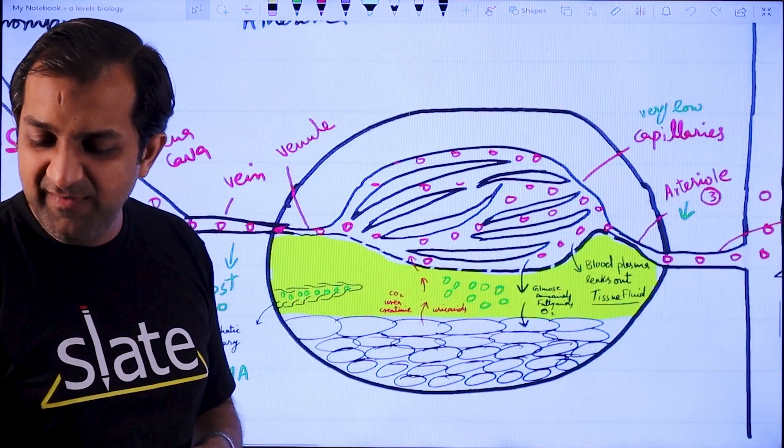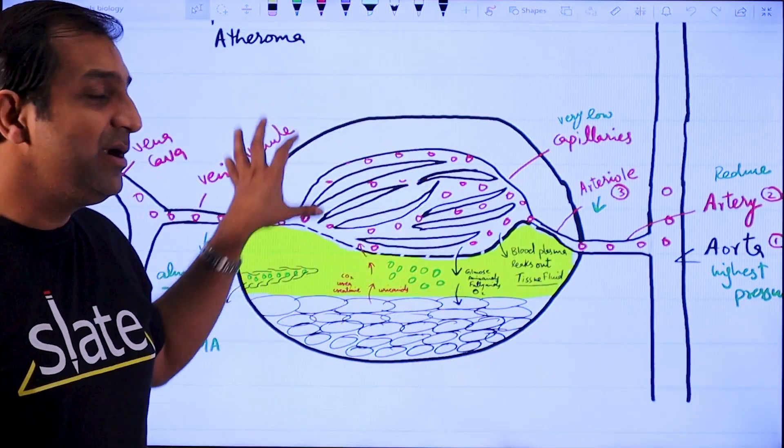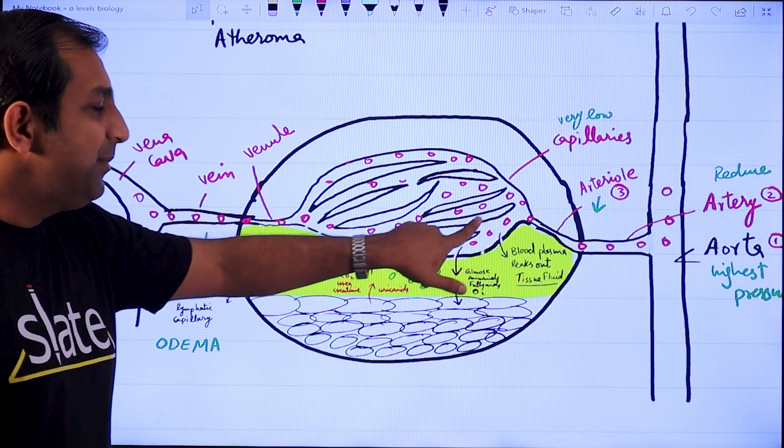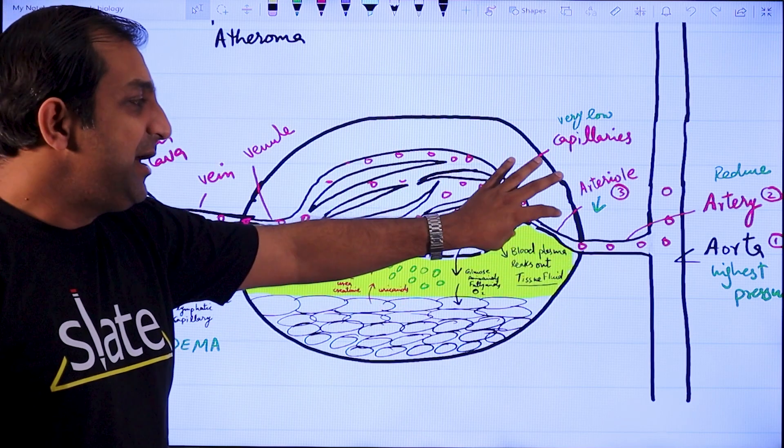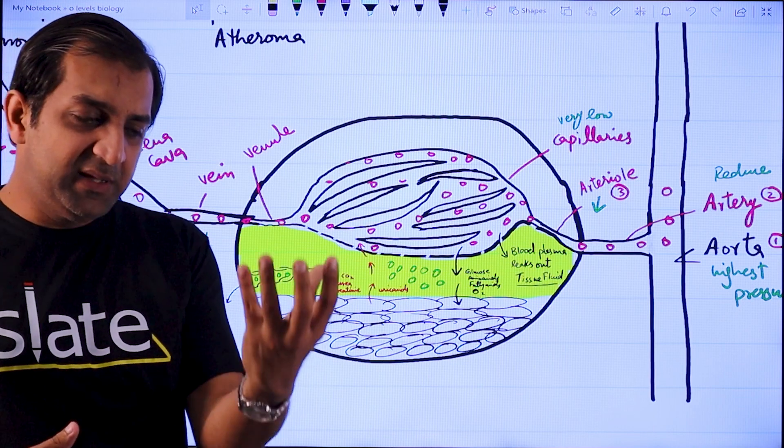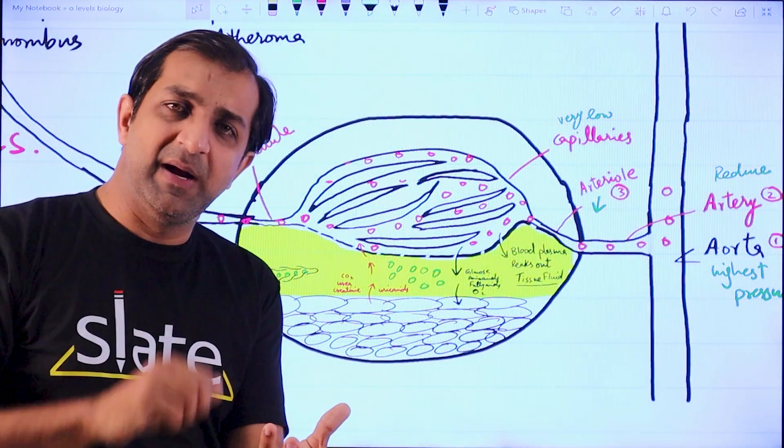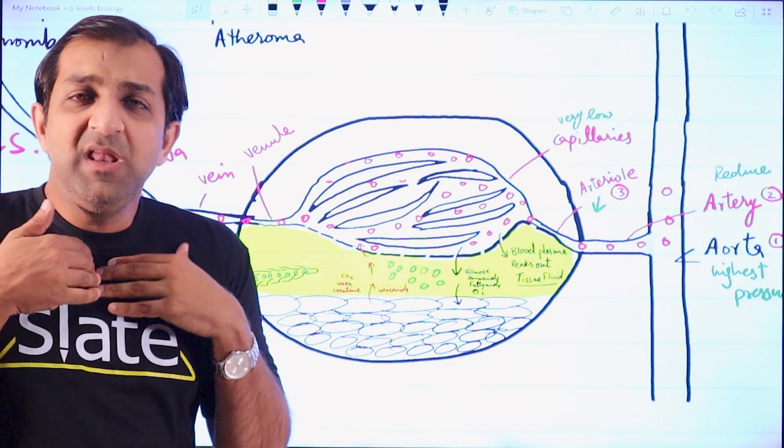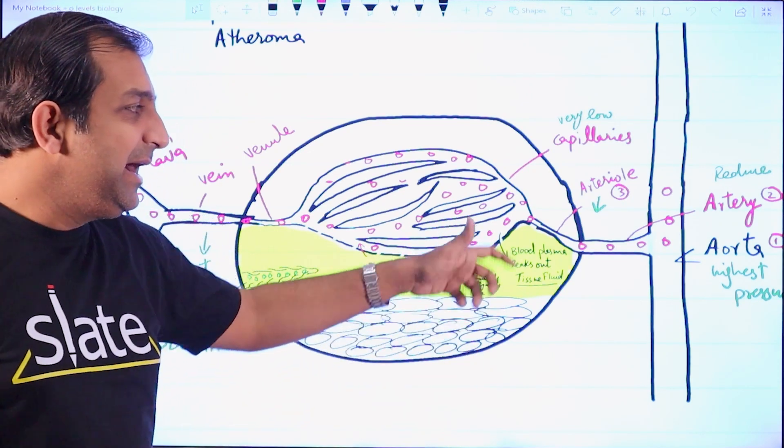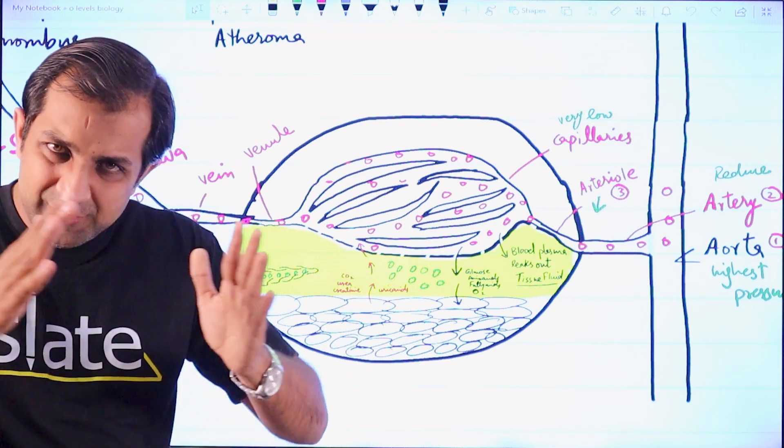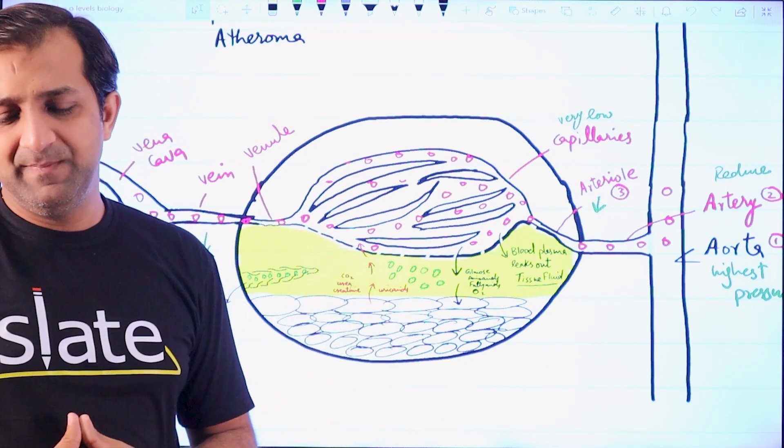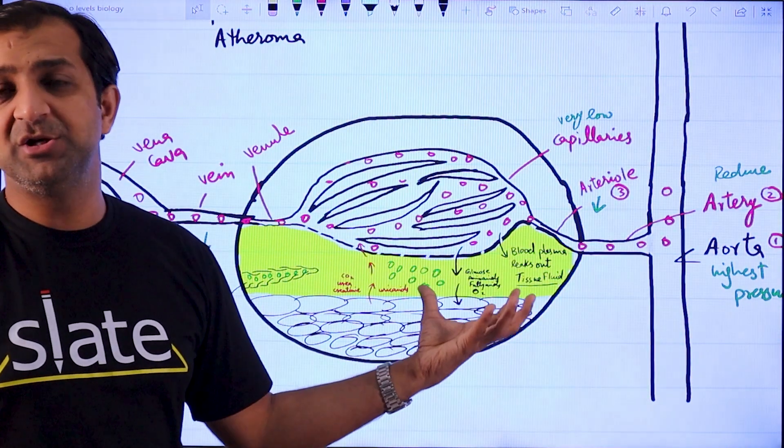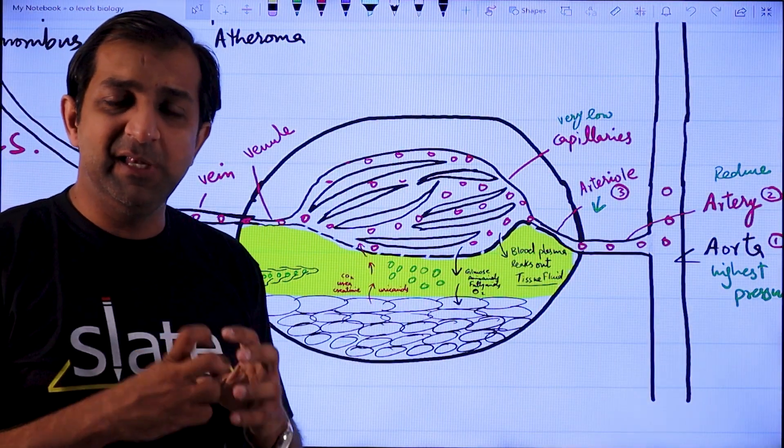So in this lecture, we discussed how this circulatory system is a closed circulation in which blood is contained inside the vessels.